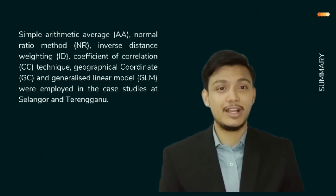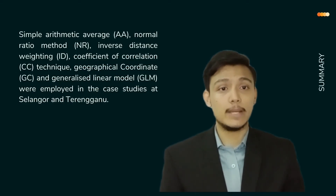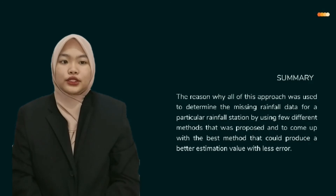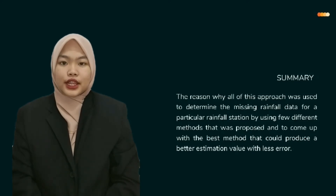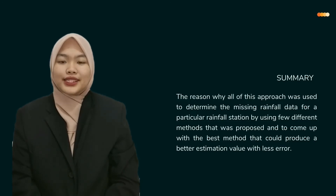Simple arithmetic average, normal ratio method, inverse distance weighting, coefficient of correlation technique, geographical coordinate, and generalized linear model were employed in case studies at Ampang and Terangganu. The reason all of these approaches were used was to determine the missing rainfall data for a particular rainfall station using several different methods, in order to find the best method that could produce a better estimation value with less error.